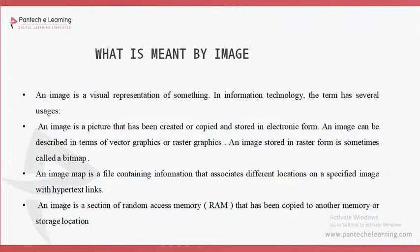So now you get some idea: an image is a 2-dimensional signal, a visual representation of something, in matrix format with rows and columns. It is a collection of pixels, and a pixel is nothing but the small portion of your image. This is an overview of what an image is.